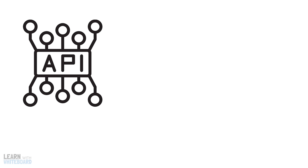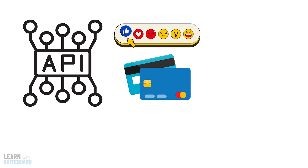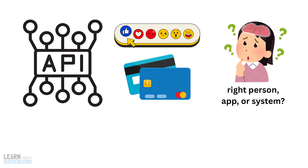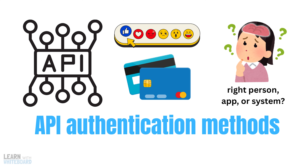APIs are everywhere. They power the apps we use, from social media to banking. But here's the big question: how do APIs know that the request is coming from the right person, app, or system? The answer lies in API authentication methods.